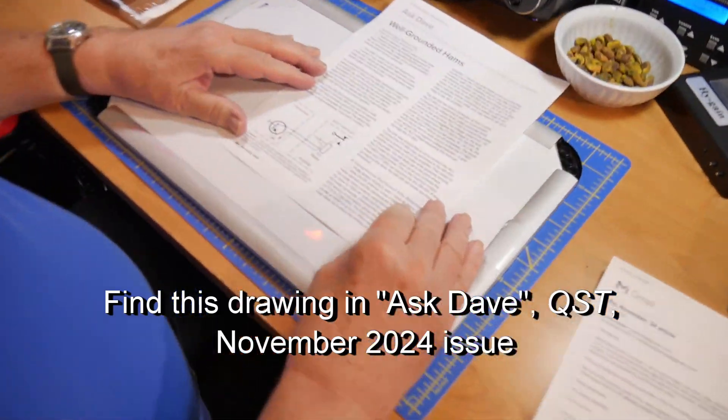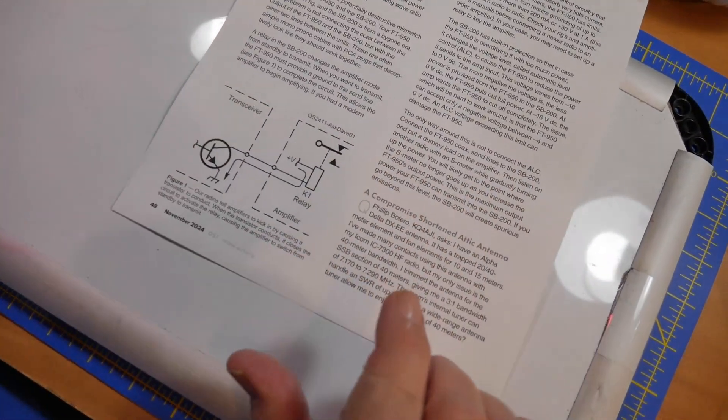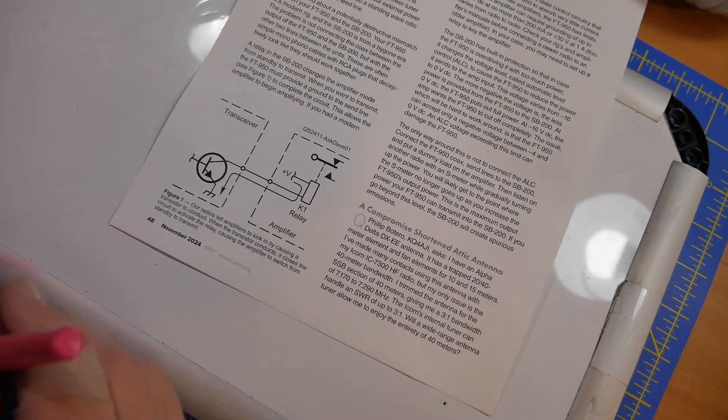We have a question today from George Kuhn, N9AUP. He was having trouble with a drawing in a recent Ask Dave issue. Now this is what you see here. This is the one he was having the trouble with. Now here is the trouble he was having.